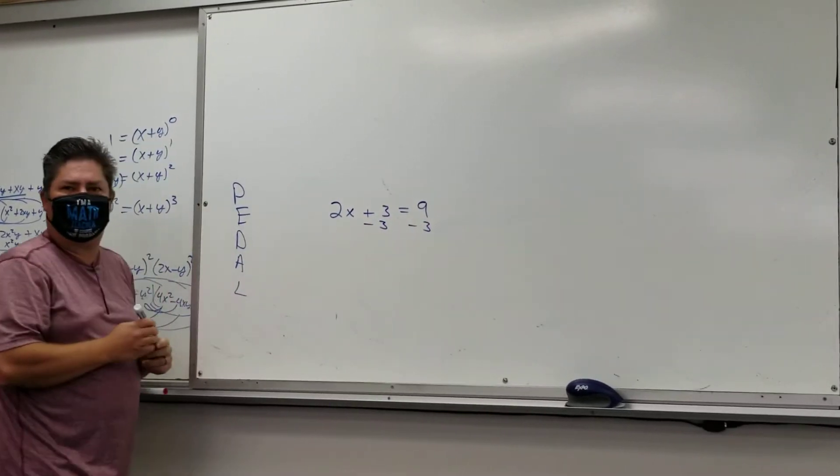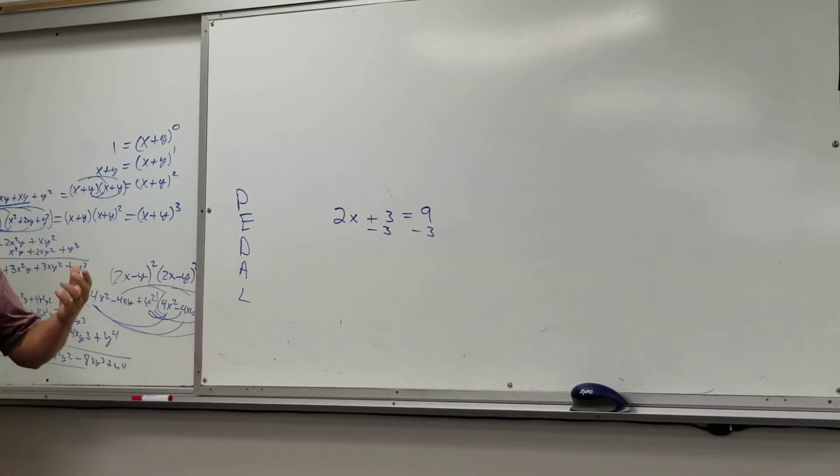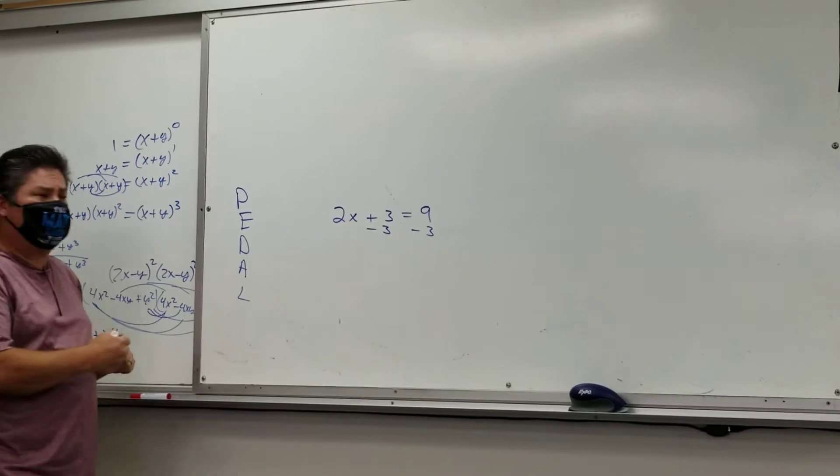Why am I subtracting three? To cancel out the three. Yeah, well, to add it to zero, right? To get it to add to zero. This is called an inverse.